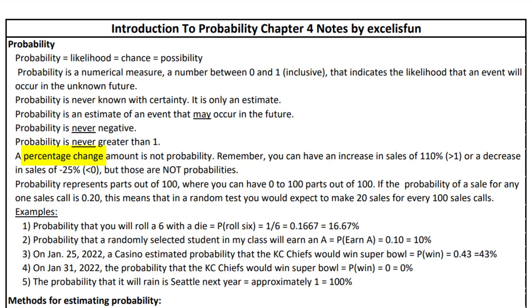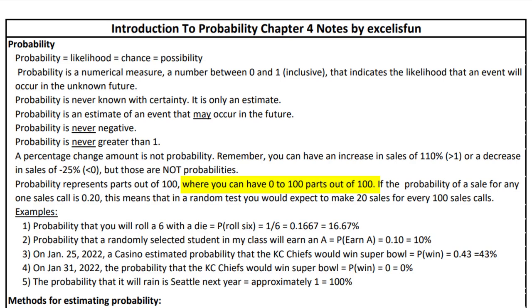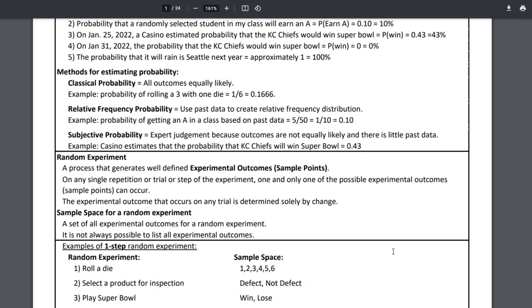Another mistake people make is thinking that a percentage change is a probability. Percentage change is not a probability. You can have an increase in sales of 110% — that's greater than 1 — or a decrease of minus 25% — less than 0. But those are not probabilities. Probability represents parts out of 100. If the probability of a sale for any one sales call is 20%, this means you'd expect to make 20 sales for every 100 sales calls.